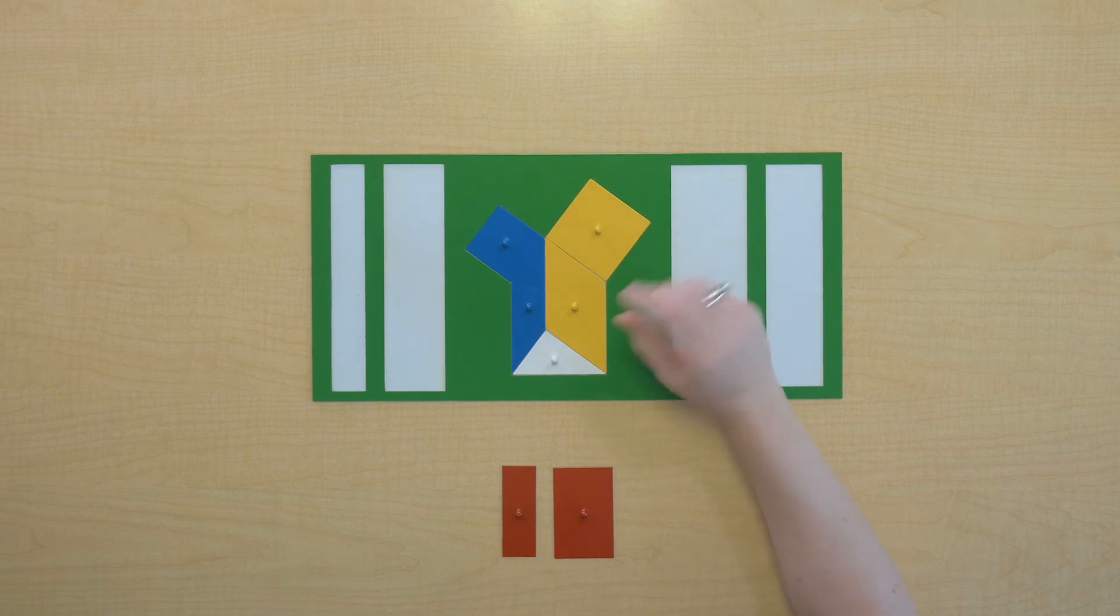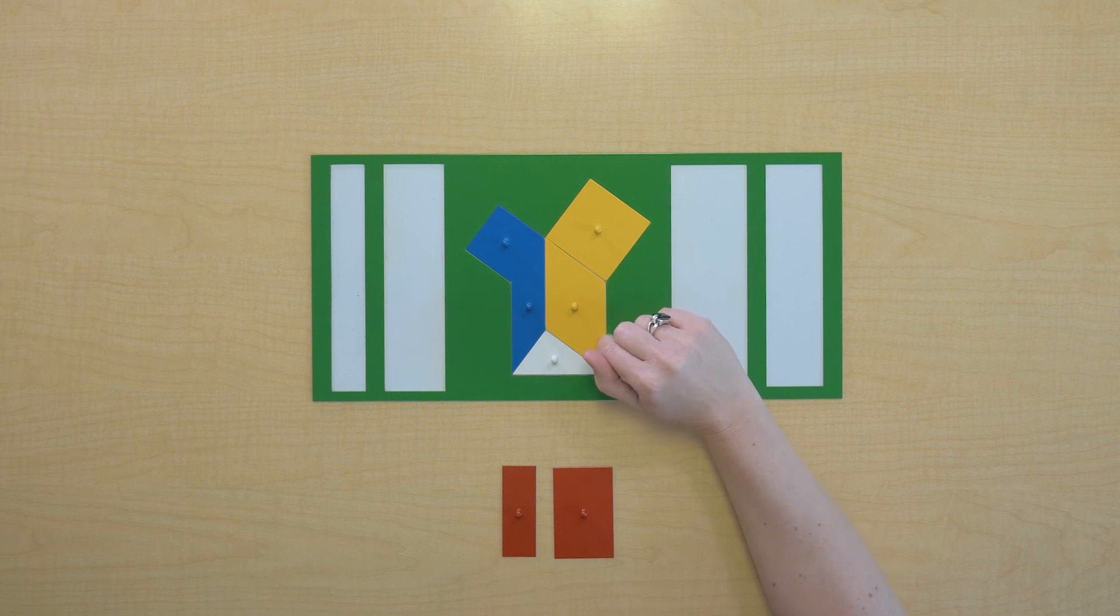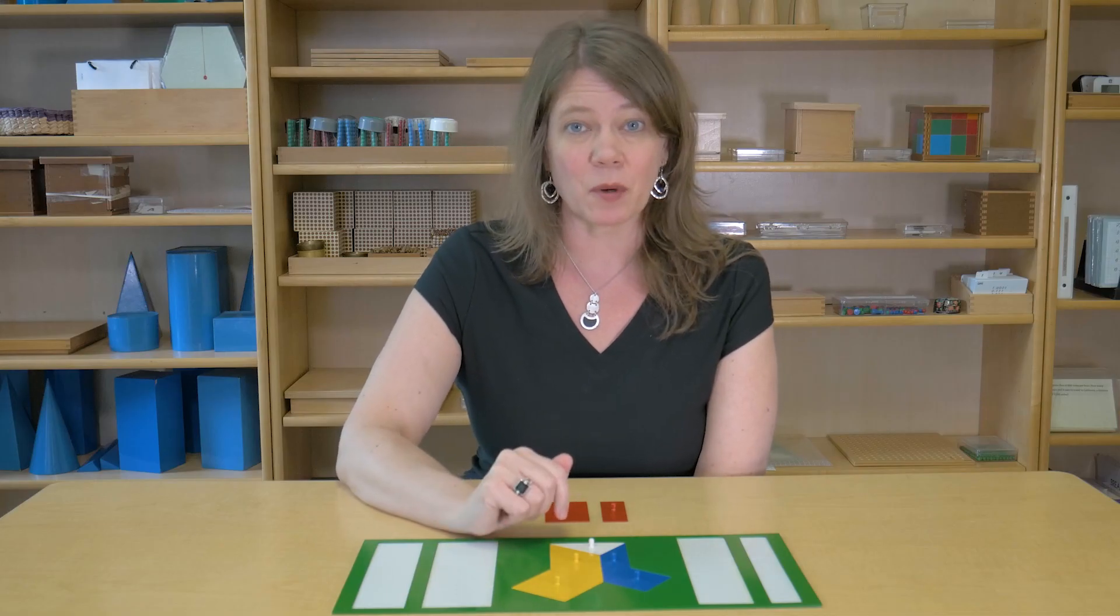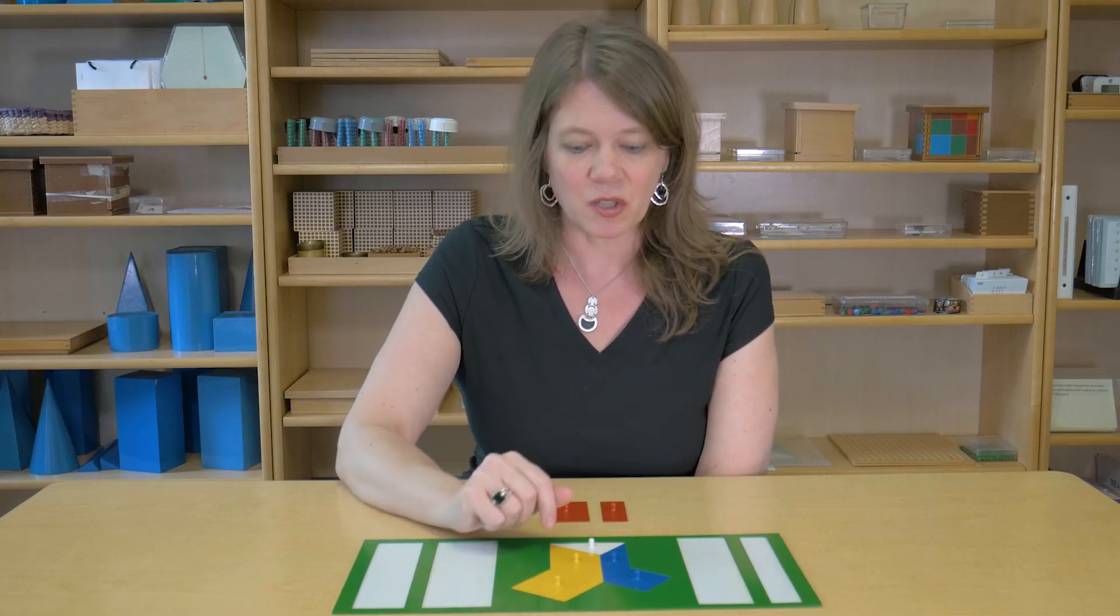Therefore, again, the squares built off the legs of this right triangle equal the square built off the hypotenuse. We just explored it in a different way. Would you like to try it now?